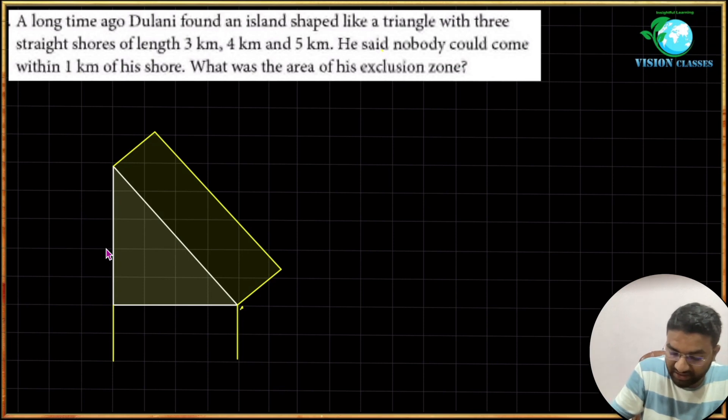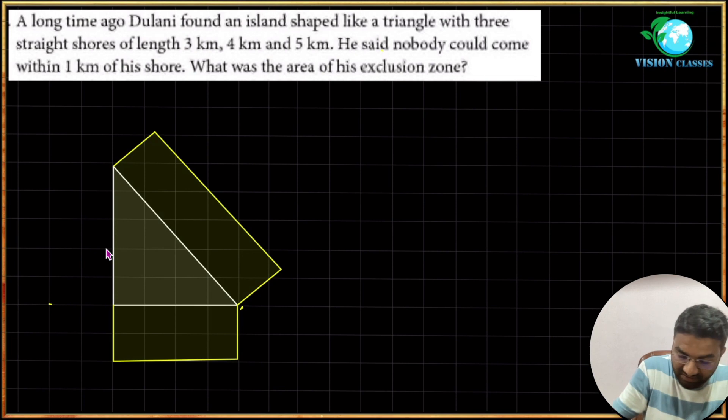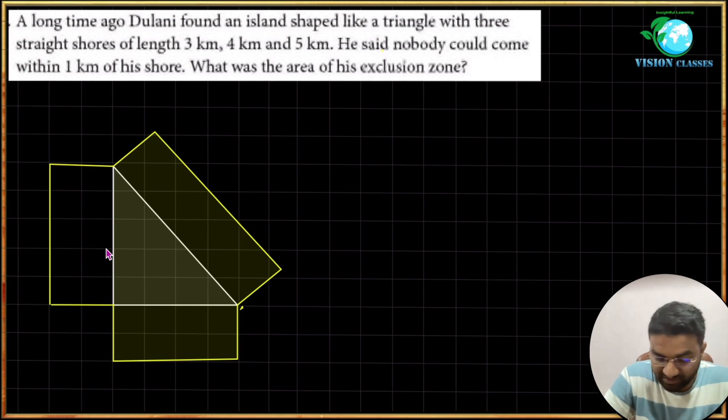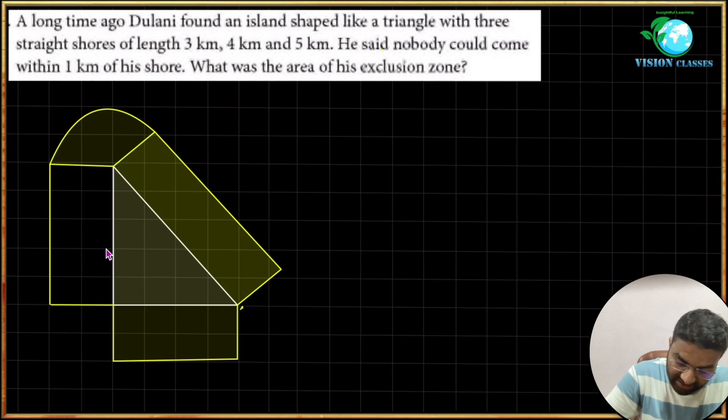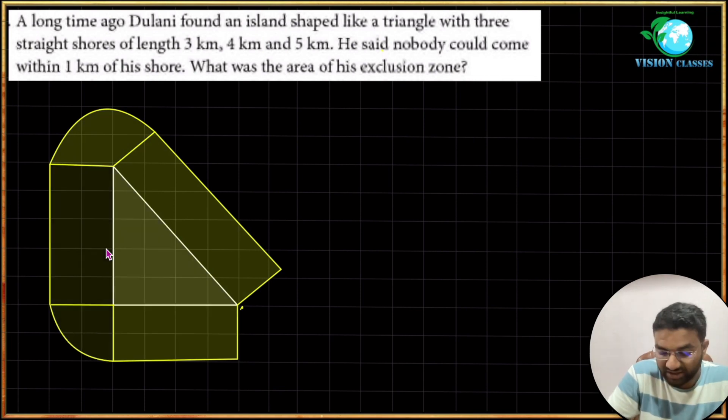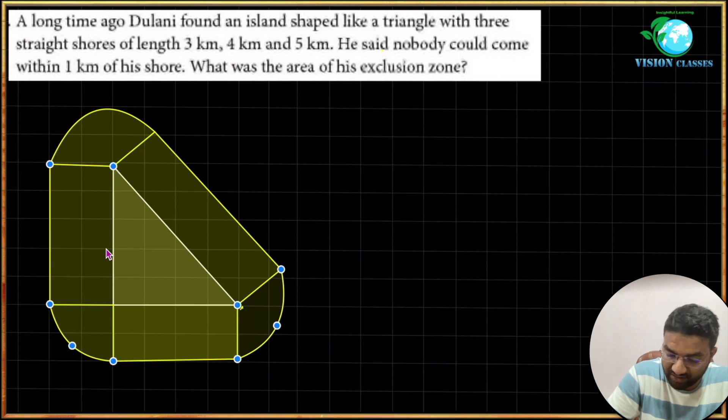Firstly draw all the 1 kilometer lengths of the exclusion zone. So you have here all the 1 kilometer lengths of exclusion zone. So this is curvature of radius 1 kilometer. Here also you have an exclusion 1 kilometer length, then here also you have 1 kilometer around exclusion zone.